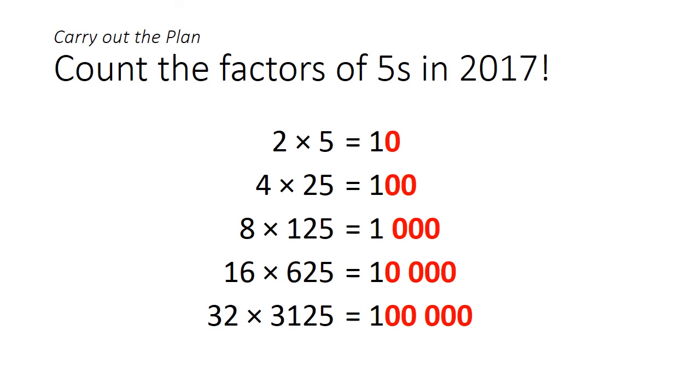125 or 5 cubed would generate 3 trailing 0s when multiplied by 8. 625 or 5 to the power of 4 will generate 4 trailing 0s when multiplied by 16. And if you're watching this video after the year 3125, there is a chance you might consider 5 to the power of 5, which is 3125. So let's look at the final answer.